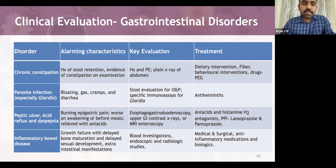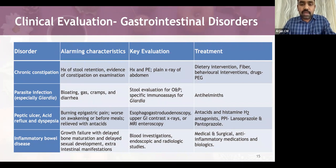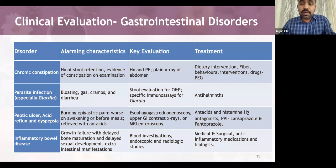Parasitic infection — particularly Giardia — can cause recurrent abdominal pain with bloating, gas, cramps, and diarrhea; stool evaluation for ova and parasites is needed, and antihelminthics are used for treatment. Peptic ulcer disease, acid reflux, and dyspepsia present with burning epigastric pain worse on awakening or before meals, relieved with antacids; suspected peptic ulcer may need esophagogastroduodenoscopy. Antacids and H2 blockers are used for acid reflux; proton pump inhibitors (lansoprazole, pantoprazole) are safe and effective for dyspepsia in children.